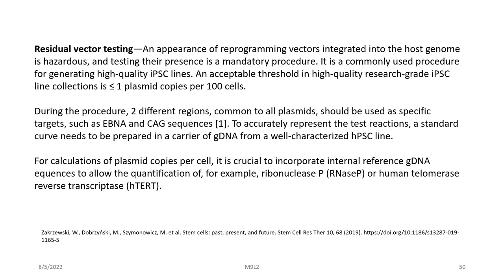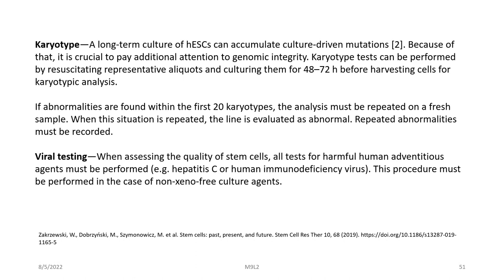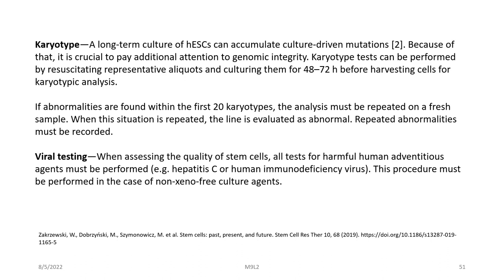For calculations of plasmid copies per cell, it is crucial to incorporate internal reference gDNA sequences to allow quantification of, for example, ribonuclease P or human telomerase reverse transcriptase (hTERT). Another important quality control parameter is the karyotype: long-term culture of stem cells can accumulate culture-driven mutations, so it is crucial to pay attention to genomic integrity. Karyotype testing can be performed by resuscitating representative aliquots and culturing them for 48 to 72 hours before harvesting cells for analysis; if abnormalities are found within the first 20 karyotypes, the analysis must be repeated on a fresh sample, and if repeated, the line is evaluated as abnormal.